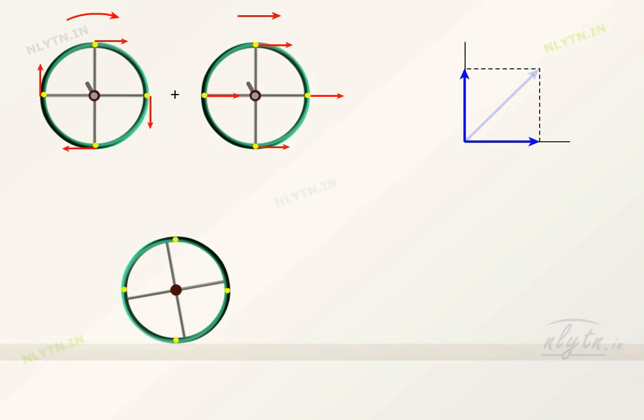So the motion of any point on the ring will be the vector sum of the translational motion and the rotational motion. Similarly, velocity of this point will be equal to v minus omega r.